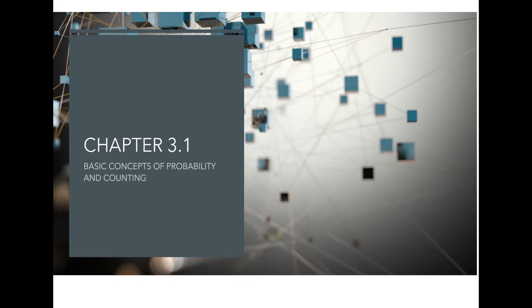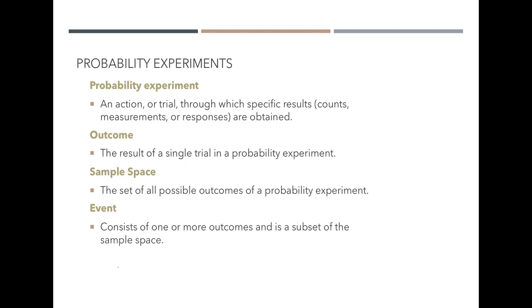In this video, we're going to look at the basic concepts of probability and some basic concepts of counting. We're going to start off with some vocabulary. When we talk about a probability experiment, it is some sort of action or trial in which specific outcomes — whether they are counts, measurements, or responses — are obtained. We could be rolling a die or picking somebody at random from a population, and we're looking at the possible outcomes and the likelihood of certain outcomes.